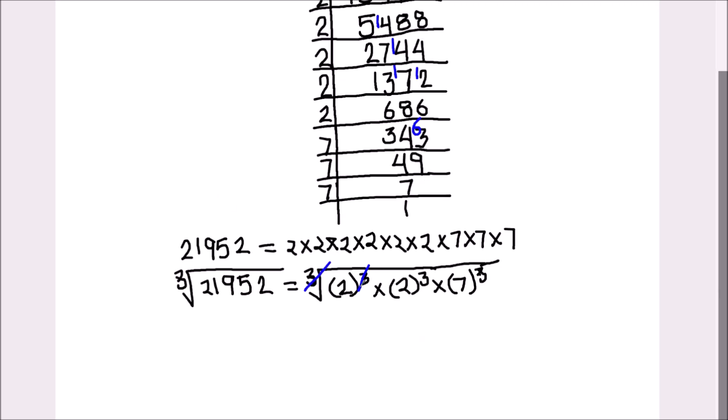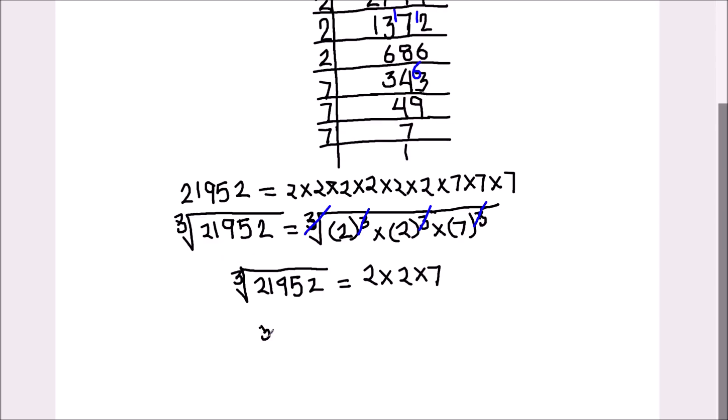This cube root and this cube and this cube get cancelled. We will have the cube root of 21,952 equals 2 times 2 is 4 and 4 times 7 is 28.